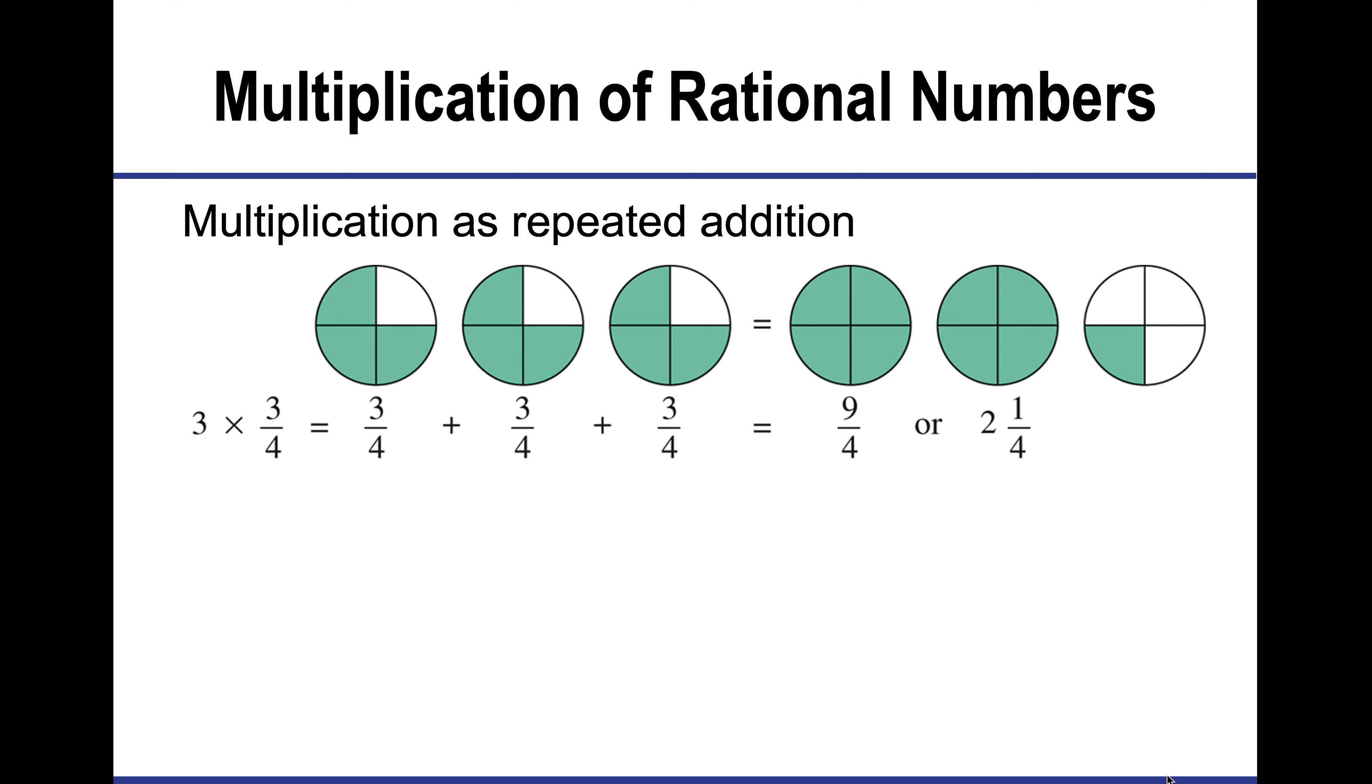When we multiply rational numbers, it's actually slightly easier than when we were working with addition and subtraction. It's important to remember that multiplication is really just repeated addition. When you're multiplying with rational numbers, you're going to multiply the top numbers together and the bottom numbers together. So this is 3 times 3 over 1 times 4, which is going to give us 9 fourths, that's an improper fraction that we can convert to a mixed number of 2 and 1 fourth.